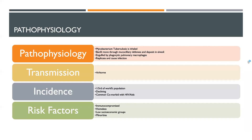The pathophysiology behind tuberculosis is that the mycobacterium tuberculosis is inhaled as an infectious particle. The bacilli — it's a bacilli type particle — then moves through the mucociliary defenses and deposits itself in the alveoli. Once in the alveoli, it's engulfed by phagocytic pulmonary macrophages, and once engulfed, it is then able to replicate and cause infection.